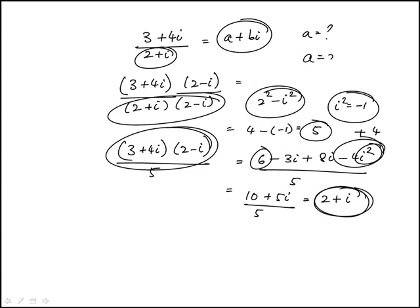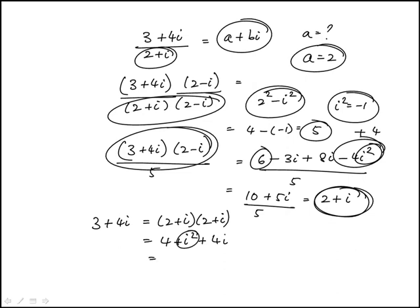So a is 2. If you need to check your answer, what we need to get is 3 plus 4i must come out to be 2 plus i times 2 plus i, which is 4 plus i squared plus 4i. i squared is minus 1, so 4 minus 1 is 3. So indeed, that checks out.